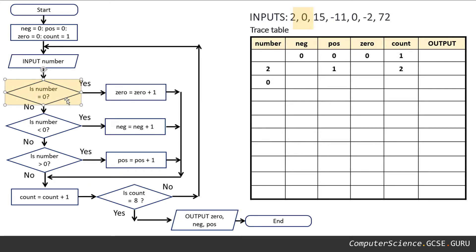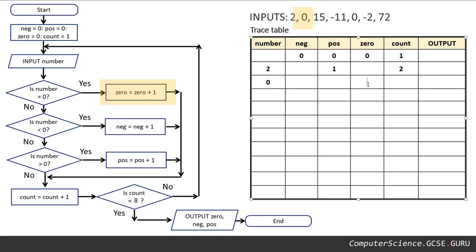Is our current value for number equal to zero? Yes, it is. So we look for the zero variable — it equals itself plus one. It's currently zero, so zero plus one is one.